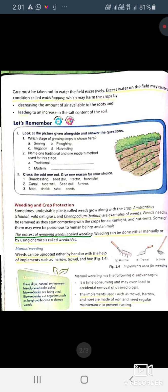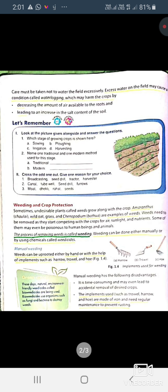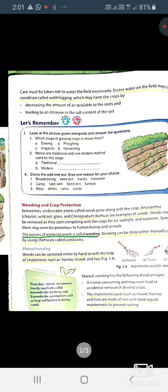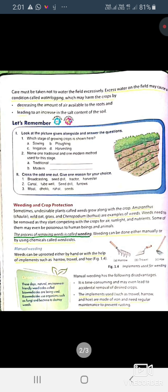Now last is weeding and crop protection. We have talked that some undesirable plants known as weeds are used to destroy the desirable plants. Some examples of that are wild oats, grass, butta, etc.